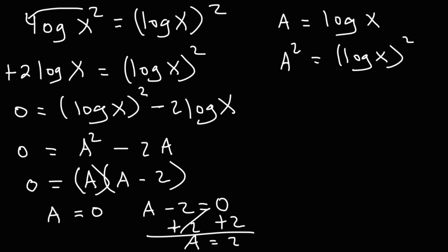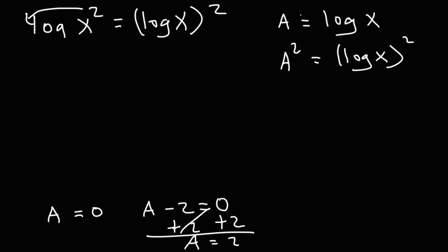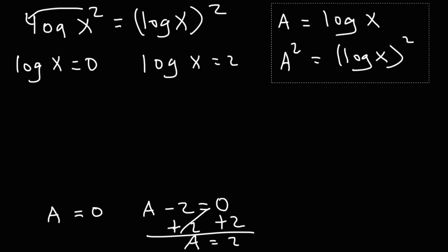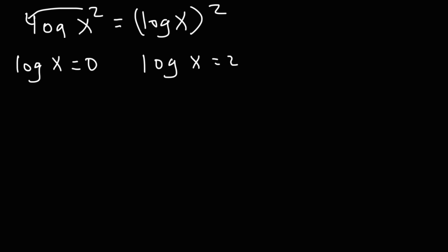So we get a is equal to 2. Since a equals 0 and a equals log x, we can say log x equals 0. Also, a equals 2, which means log x equals 2, so we're going to get two different answers. There's another property of logs you need to know: log base a of b equals c is in logarithmic form, and we can convert it to exponential form — a raised to the c equals b.